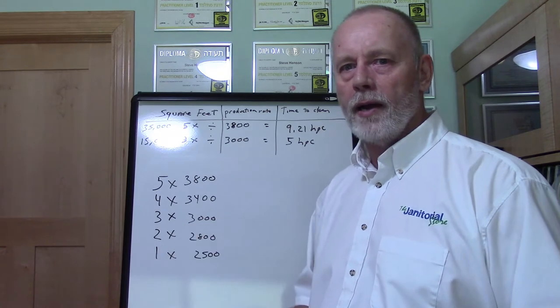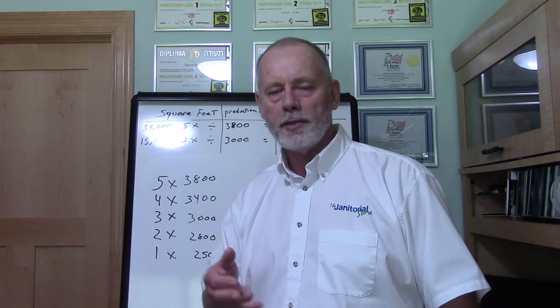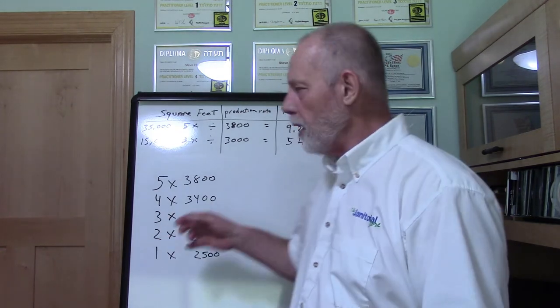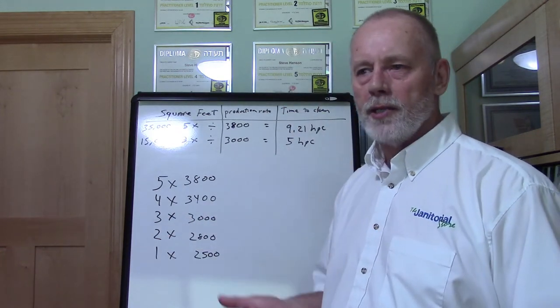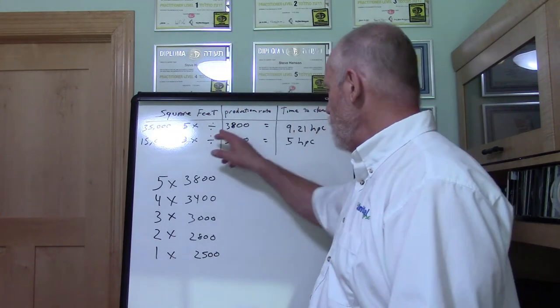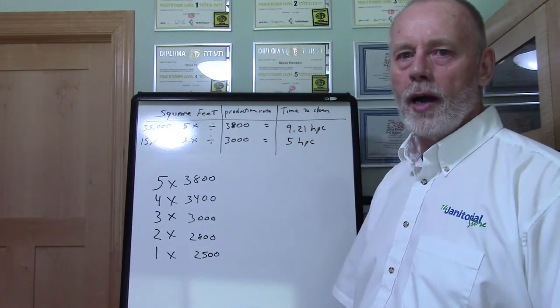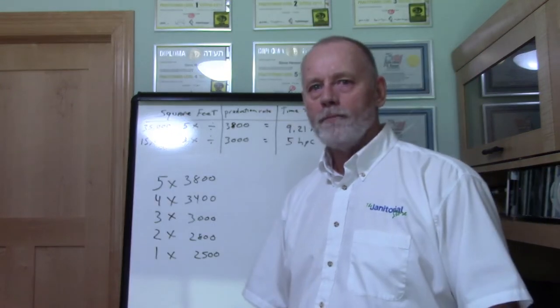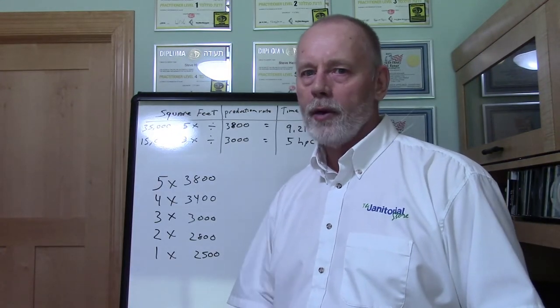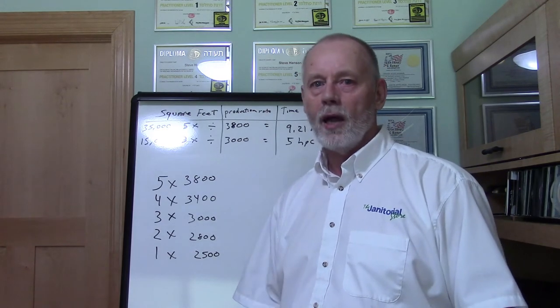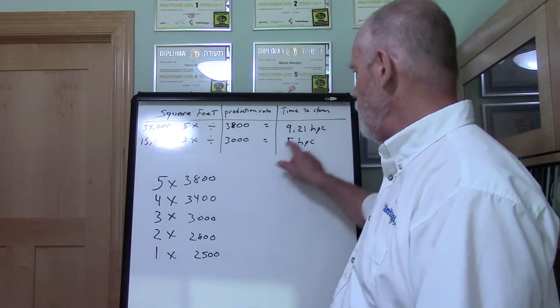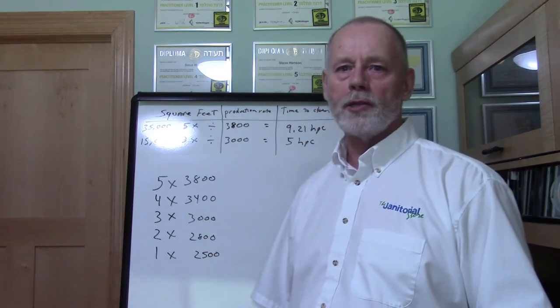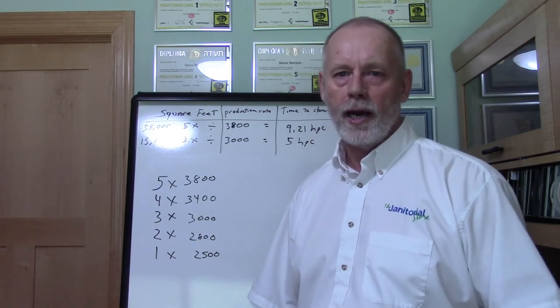In either case, it's important to know your production rates — how you arrive at them and how to use them. Production rates help you set your price point by determining hours per clean, but they also help you determine how many people you may need in a facility. If a facility is going to take 9.21 hours to clean, you might put two people in there, because that's a long day for one cleaner. Knowing the time to clean helps you establish how many cleaners to assign to each account.